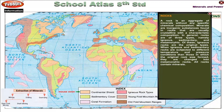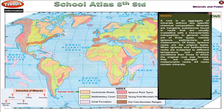Rocks. A rock is an aggregate of minerals without any specific chemical composition. Minerals are inorganic substances found in rocks that are usually crystalline with a characteristic composition. In general, rocks are of three types: igneous, sedimentary and metamorphic. Of these, igneous rocks are the original types.